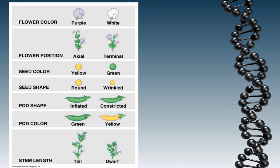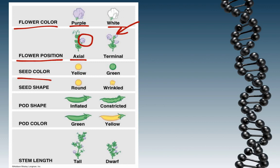Here we see a list of traits that Gregor Mendel studied. For example, he studied the color of the flowers — he studied purple and white. He studied the position of the flower: axial, which meant the flower was located on the side of the plant, and terminal, which meant the flowers were located at the tip or top of the plant. He looked at the color of the seeds — some had yellow seeds and some had green. He also looked at the shape of the seeds: some were round and some were wrinkled.